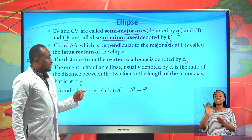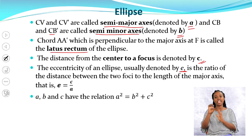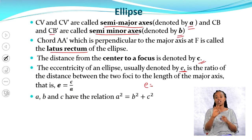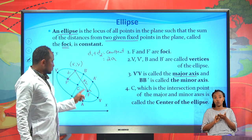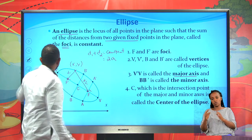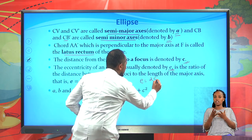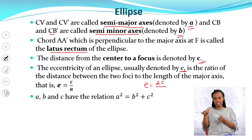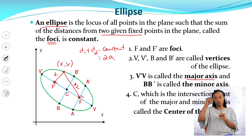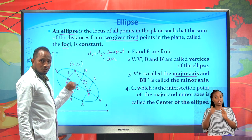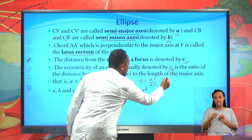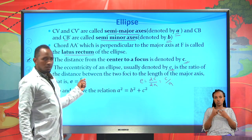The eccentricity of an ellipse, usually denoted by the letter e, is the ratio of the distance between the two foci to the length of the major axis. The distance between the two foci is 2c, and the length of the major axis is 2a. Therefore, eccentricity is given by 2c divided by 2a, which simplifies to c over a.